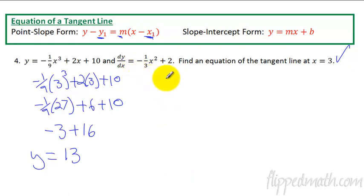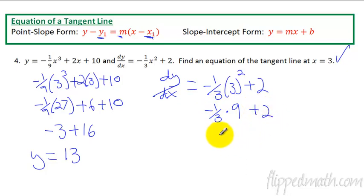Now we need dy dx. So the derivative with a 3 plugged in is going to be negative 1 third times 3 squared plus 2. We get 9, negative 1 third times 9 plus 2, negative 3 plus 2, negative 1. So the derivative at the value of 3 is going to equal negative 1.